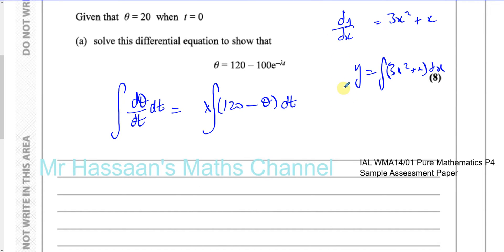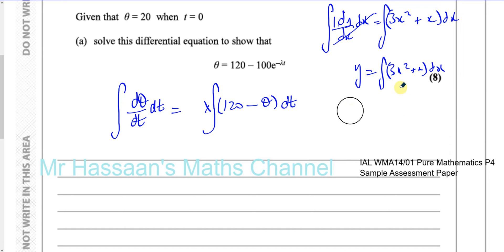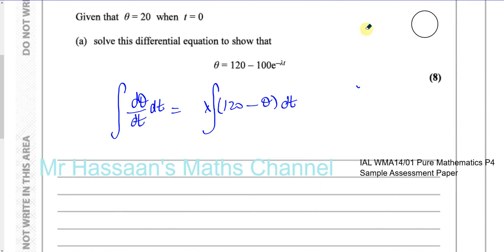What you're actually doing in reality is integrating both sides — integrating this side with respect to x and integrating this side also with respect to x. You end up with the integral of dy, which is basically the integral of 1 with respect to y, giving you y. And then you have the integral of 3x squared plus x with respect to x, which gives 3x cubed over 3 plus x squared over 2 plus c. So that's actually what you're doing when you're integrating, which you don't really think about in P1 and P2. That's what we're going to do here to solve this differential equation.